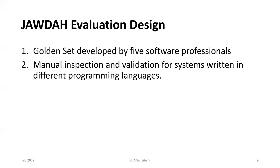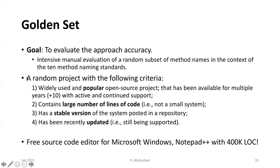How did we evaluate JODA? We implemented two different ways to evaluate JODA. One is using the golden set developed by software professionals, and we also considered manual inspections and validations for systems written in different programming languages. We randomly chose an open source system for our golden set.